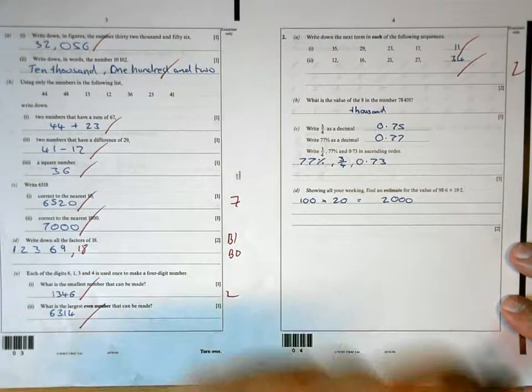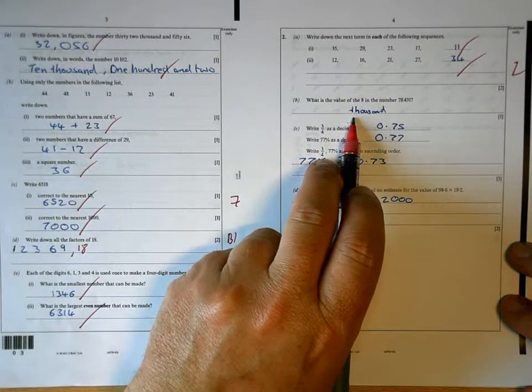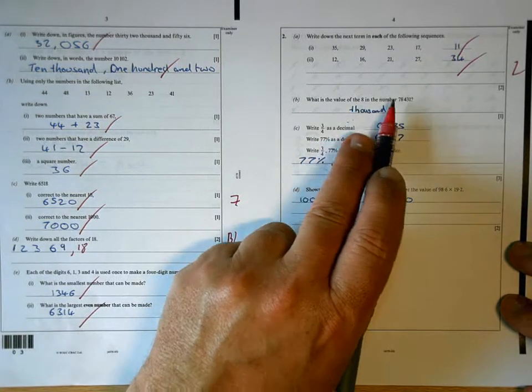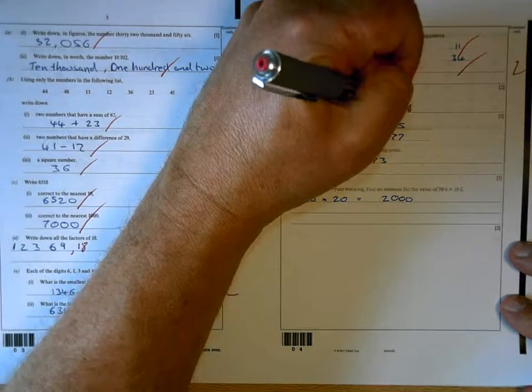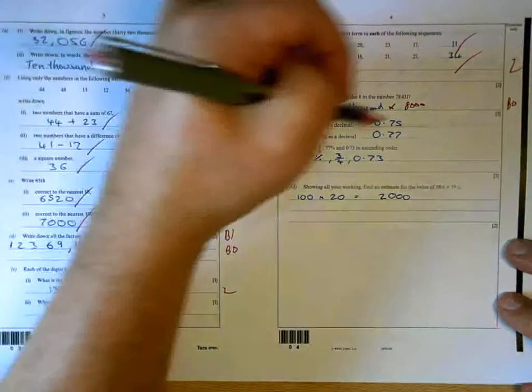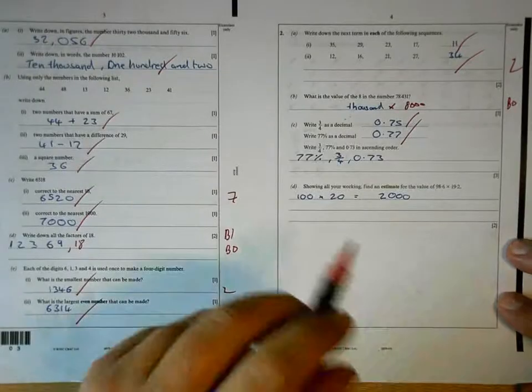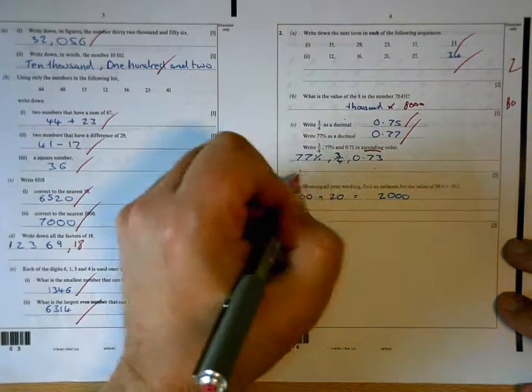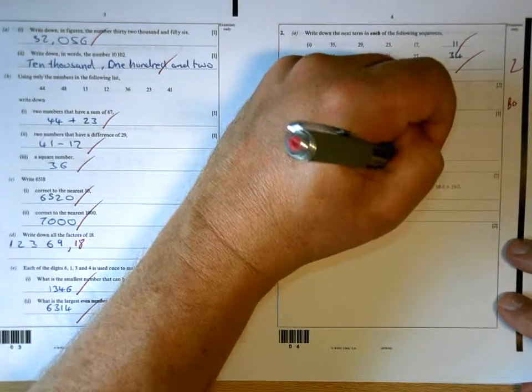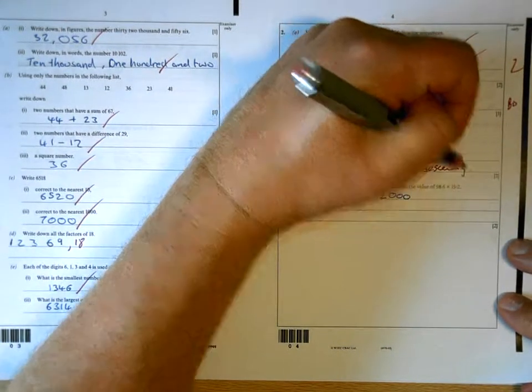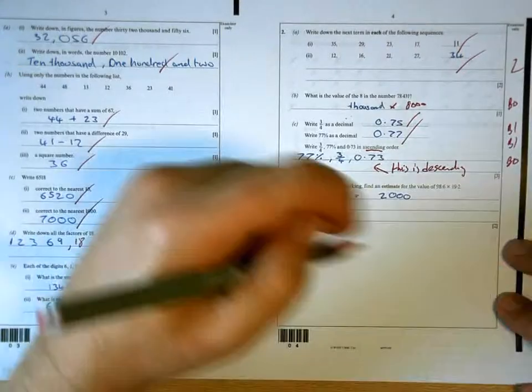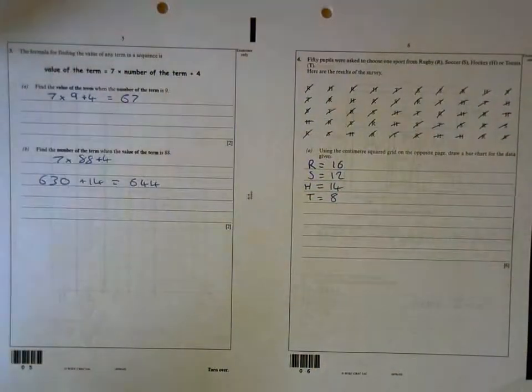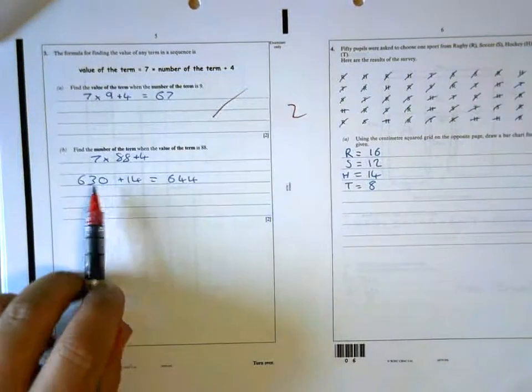11 and 34, all right. Now for this one, you're not going to get the mark for what you've written. You have to write 8,000. The value of the 8 is in the thousands column, but the fact that it's 8 makes it worth 8,000. If it was a 3, it would be worth 3,000. So you need to write that. 0.75, 0.77 is correct. And then here, the mistake that you made is that is descending, not ascending. So you're going to lose a mark for having those in the wrong order.